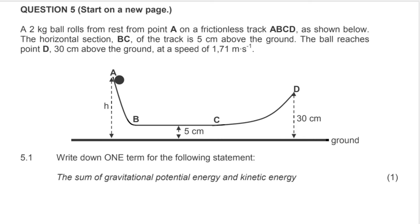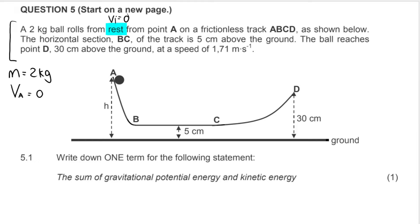The question says we have a two-kilogram ball — so they've given me the mass — and it rolls from rest. It's very important when you read your question to look for specific keywords. 'Rolls from rest' tells you the initial velocity at point A is zero. They also tell me that the track is frictionless — A, B, C, D — and we need to work with isolated systems in this section.